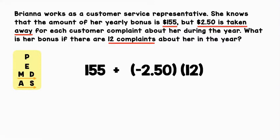First is parentheses. We don't have anything to evaluate inside parentheses — we have negative 2.50 and 12 inside different parentheses, so let's cross that out. Next is exponents. We don't have any exponents, so we can cross that out as well. Next is multiplication and division from left to right. We only have multiplication here, so let's evaluate that.